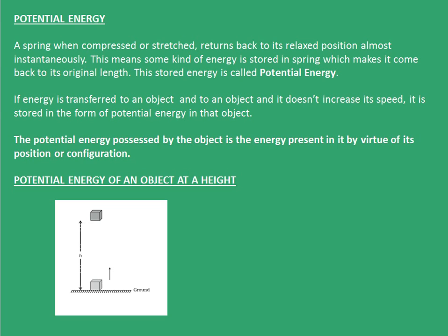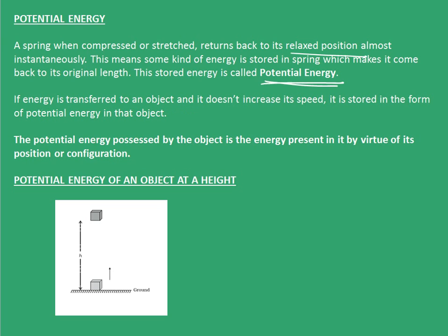Now let's move on to potential energy. A spring, when compressed or stretched, returns back to its relaxed position almost instantaneously. This means some kind of energy is stored in the spring, which makes it come back to its original length. This stored energy is called potential energy. If energy is transferred to an object and it doesn't increase its speed, it is stored as potential energy. The potential energy of an object is the energy present by virtue of its position or configuration. Potential energy associated with height is given as mgh.